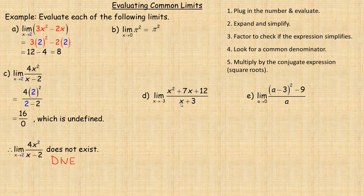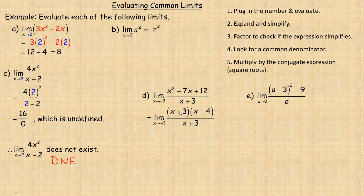In example d, as x tends towards negative 3, putting negative 3 in place of x gives 0 in the denominator and 0 in the numerator — the indeterminate 0 over 0 form. The trinomial x squared plus 7x plus 12 will factor. We look for two numbers that add to 7 and multiply to 12, which are 3 and 4. So the numerator factors into (x+3)(x+4). The (x+3) factors divide out, leaving x plus 4. Substituting negative 3 gives negative 3 plus 4 equals 1, so the limit is 1.